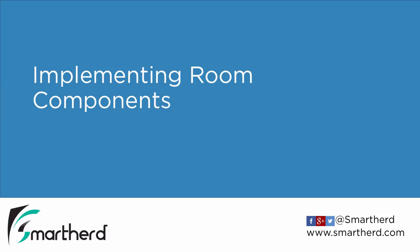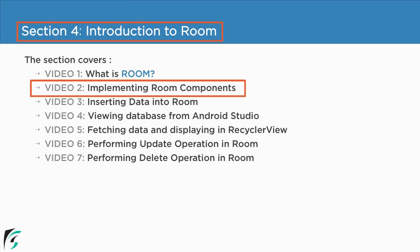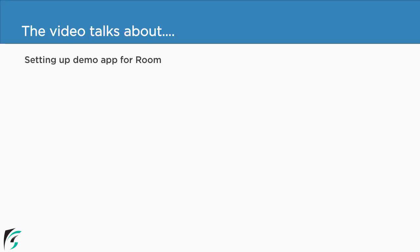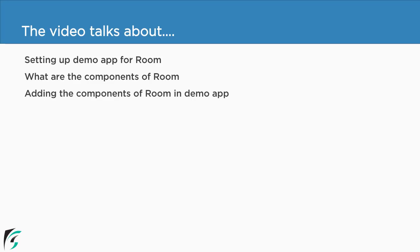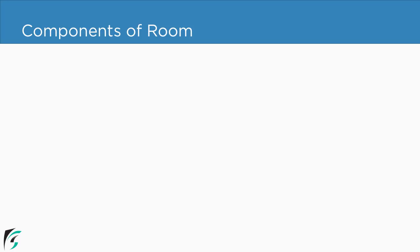Implementing Room Components. You are in Section 4, Video 2. In this video, we will learn about setting up the demo application for Room, we will add various dependencies, we will see what are the components of Room, and then we will add the components of Room in our demo application and get started to use Room database for our Android app. So let us first see what are the components of Room.